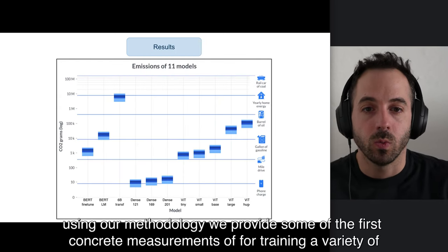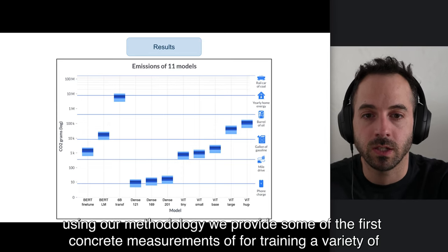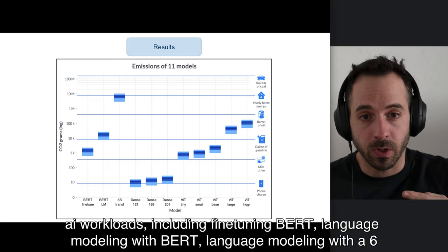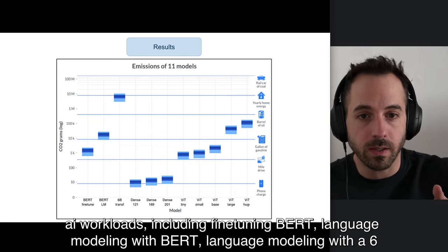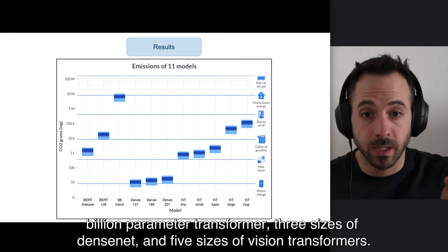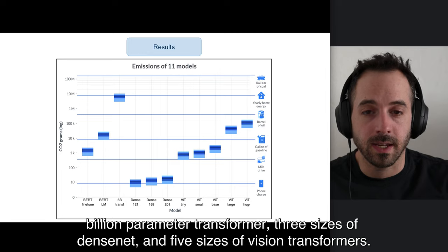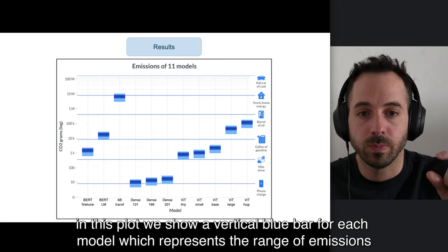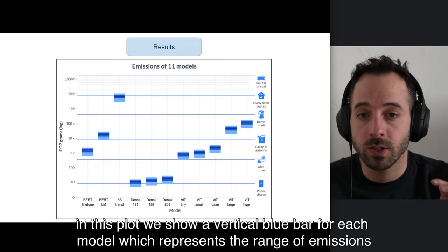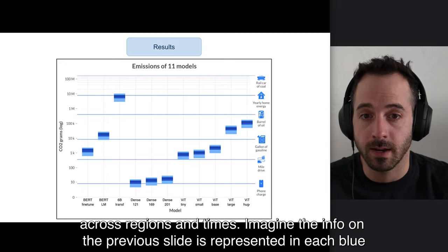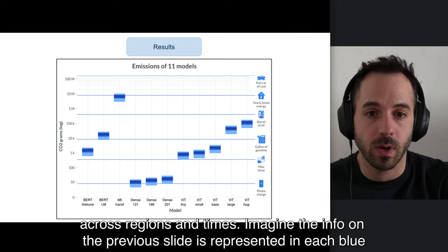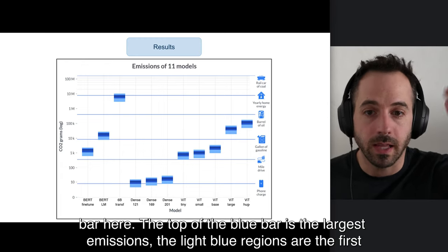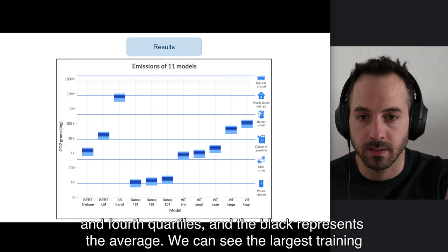Using our methodology, we provide some of the first concrete measurements of the emissions for training a variety of AI workloads, including fine tuning BERT, language modeling with BERT, language modeling with a 6 billion parameter transformer, three sizes of DenseNet, and five sizes of vision transformers. On this plot, we show a vertical blue bar for each model, which represents the range of emissions across regions and times. The top of the blue bar is the largest emissions, the light blue regions are the first and fourth quartiles, and the black is the average.